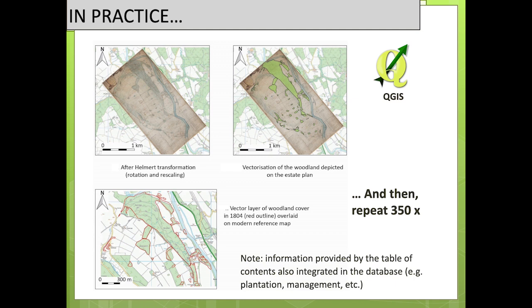The next step is vectorizing the woodland — how we integrate and capture the data into a geographic information system. It's not only redrawing the woodland; it's also integrating into the database all the information we have about this woodland, such as the management type when available. Here I put an example of how the vectors overlay today on the 1804 map, and as you can see it overlays quite well. In most cases, the planimetric accuracy of this map is very good — from 5 to 10 meters, up to 20 meters from truth — which for woodland cover reconstruction can be considered as enough.